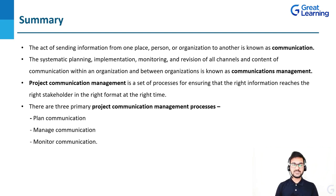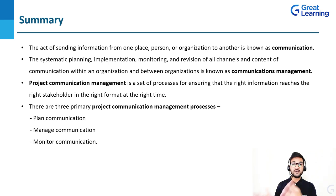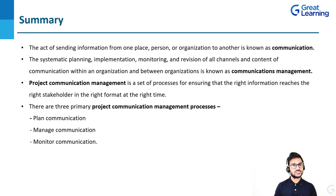We discussed the three primary project communication management processes: planning communication, managing communication, and monitoring communication. In planning communication, we understand the requirement of stakeholders — what they expect, the language they are comfortable in, any particular technology, and the culture of these stakeholders. Then implementing or executing that strategy is managing communication, which also includes documenting everything required for future reference. Then monitor communication — you monitor and control communications and revise the plan based upon the feedback of the team throughout the life cycle of the project. These are the three main processes of project communication management. Thank you so much.